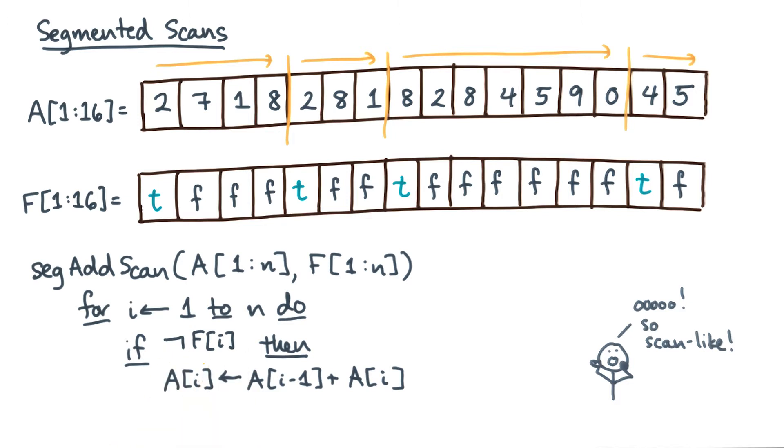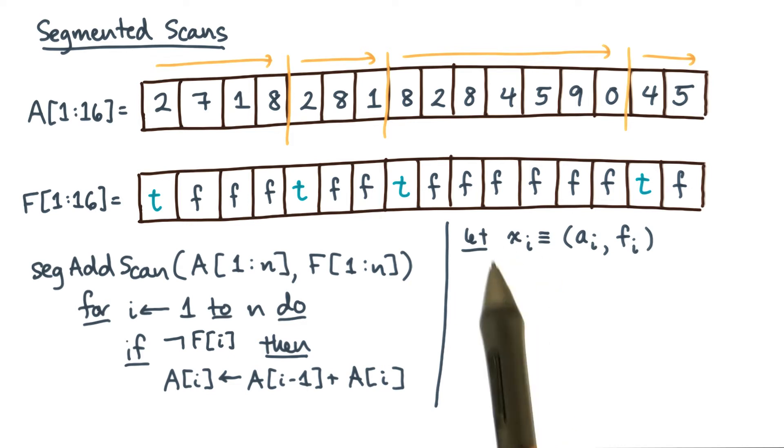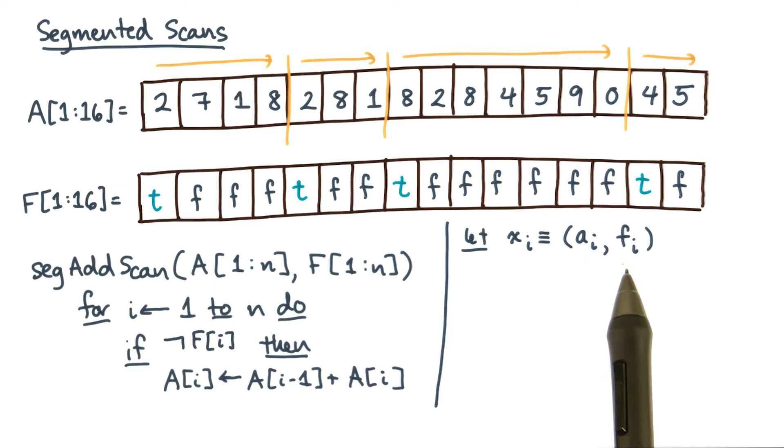So what if we did the following? I'm going to define a new kind of value, which I've labeled here as x sub i. This x sub i is basically a tuple, or in this case, a pair. The pair consists of one value from the array and the corresponding flag. Now from this new data type, let's define a new funny operator that I'll call up.